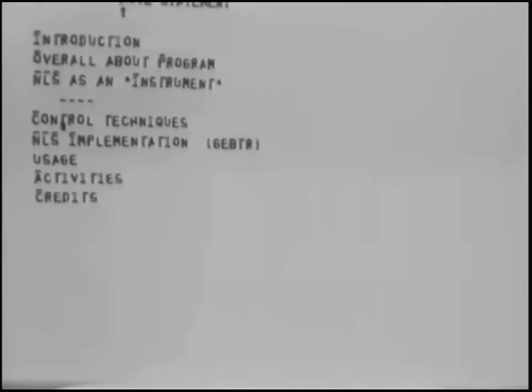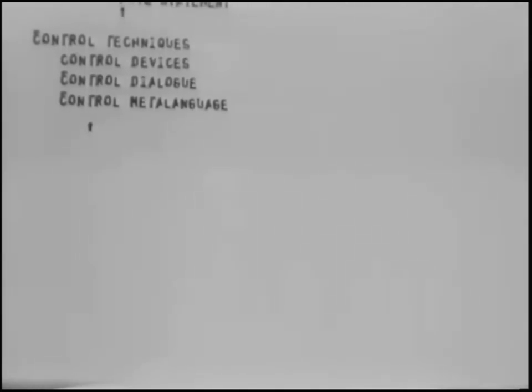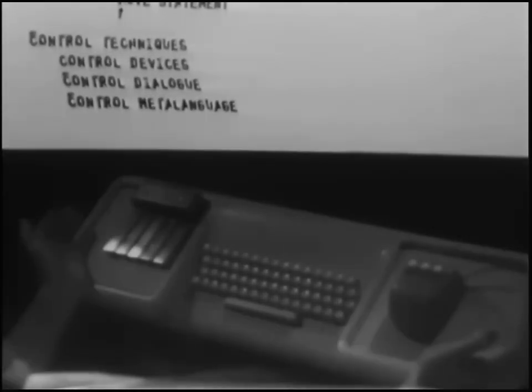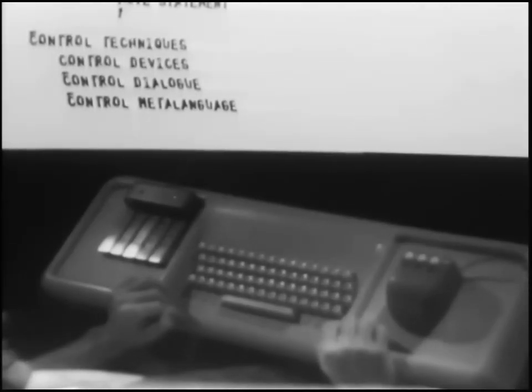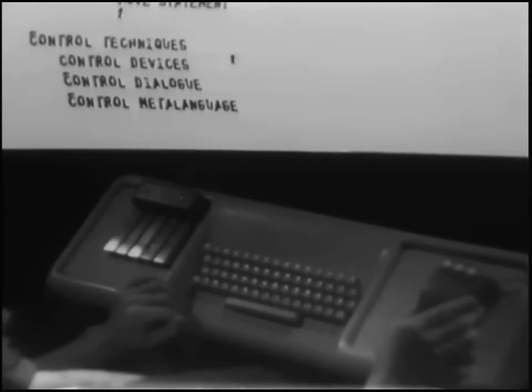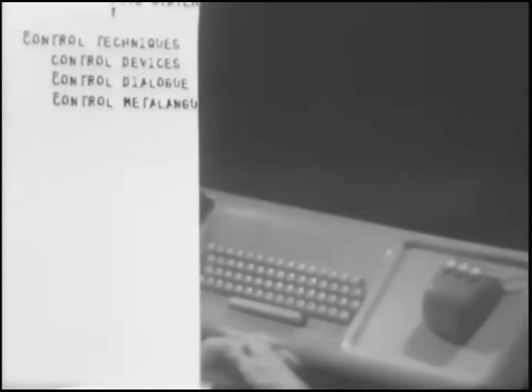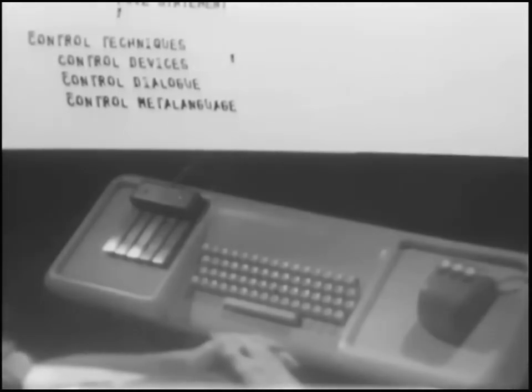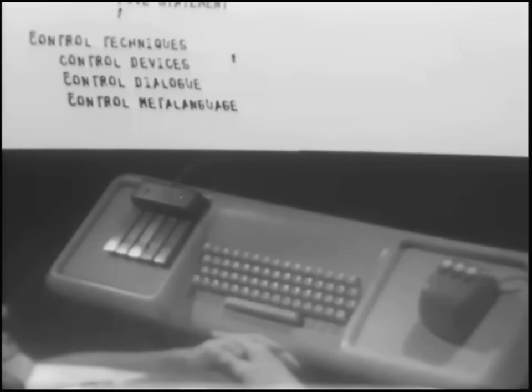I'm going to open up and talk to you about the control techniques: control devices, control dialogue, and control meta-language that we're using. To talk about control devices, we'll use this overhead camera shot where you can see the devices I'm using. I use three and they're not all standard: a pointing device called a mouse, a standard keyboard, and a special keyset. And we're going to go for a picture down in our laboratory in Menlo Park and pipe it up to show you more about how that mouse works. Come in, Menlo Park.